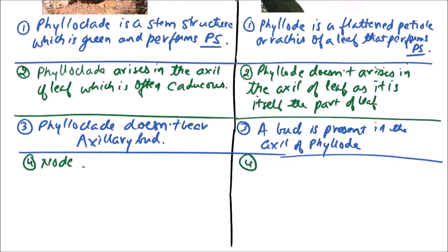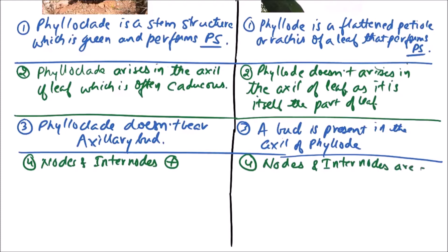The next difference concerns nodes and internodes. In a phylloclade, nodes and internodes are present, as it is a modification of a stem. While in a phyllode, nodes and internodes are absent.